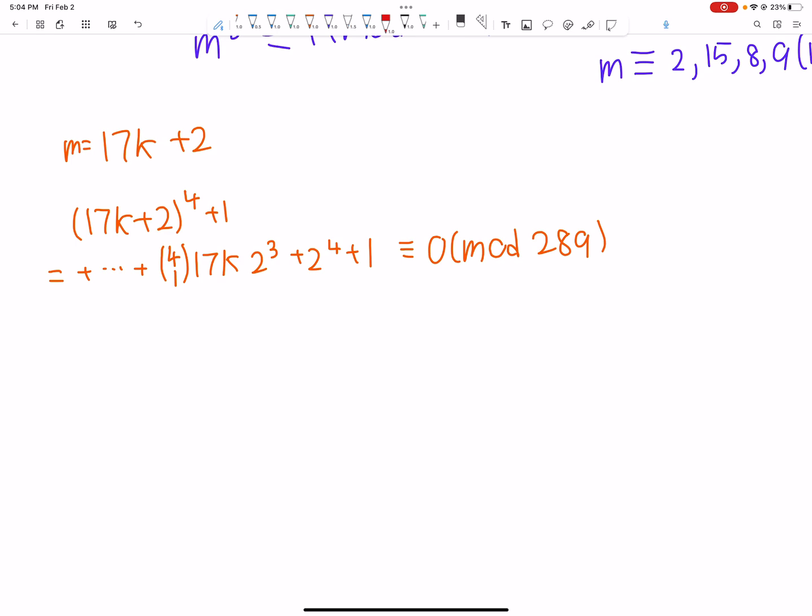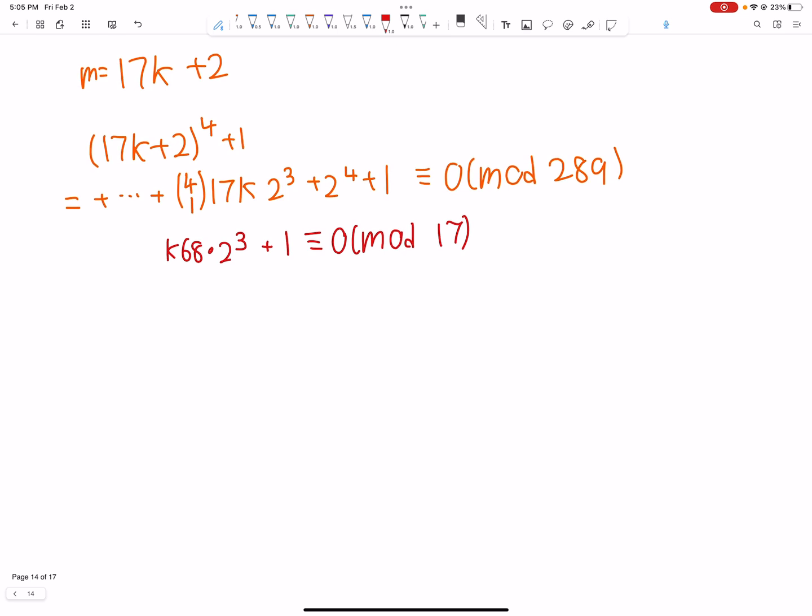And we get that we need to have 68 times 2 cubed plus 2 to the 4th plus 1, 17, divided by 17, 1. We have to have this thingy is 0 mod 17. Sorry, 68. There should be k here.